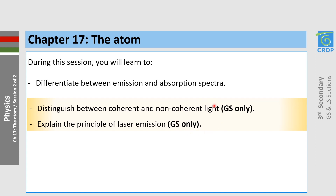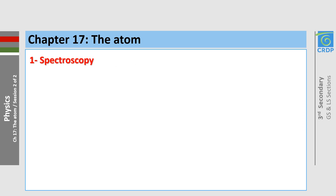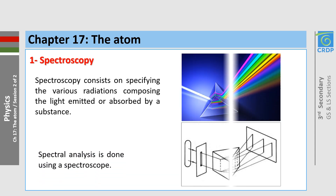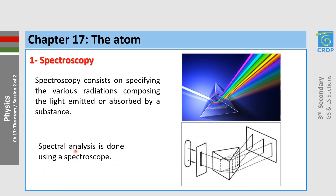The last two points concern GS students only. Let's begin with spectroscopy. Spectroscopy consists of specifying the various radiations composing the light emitted or absorbed by a substance. Spectral analysis is done using a spectroscope.